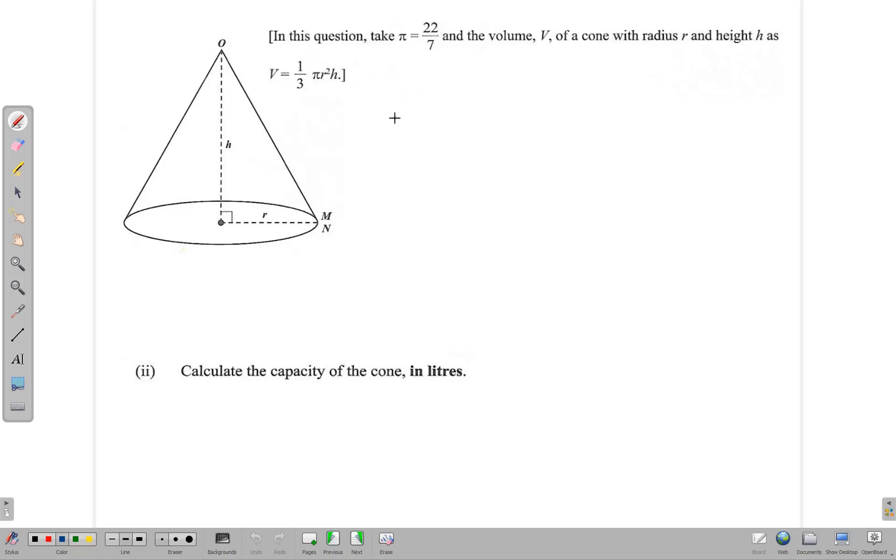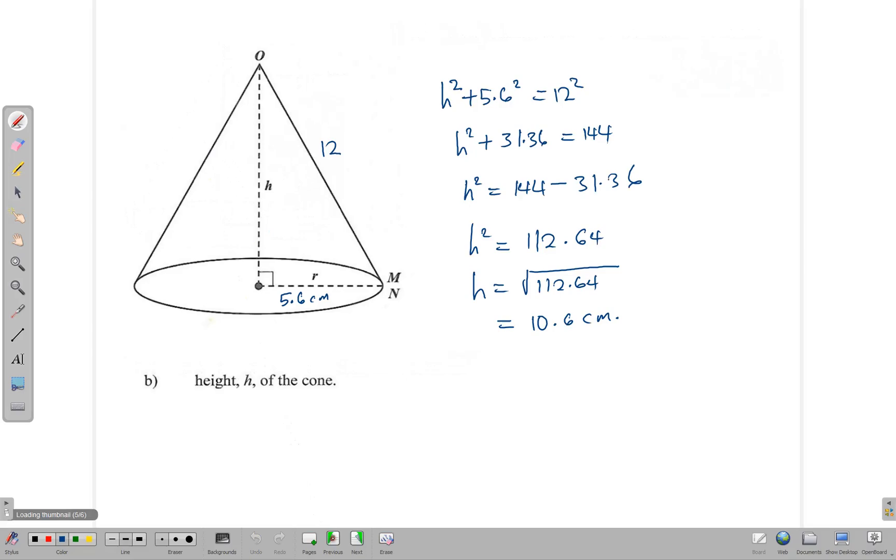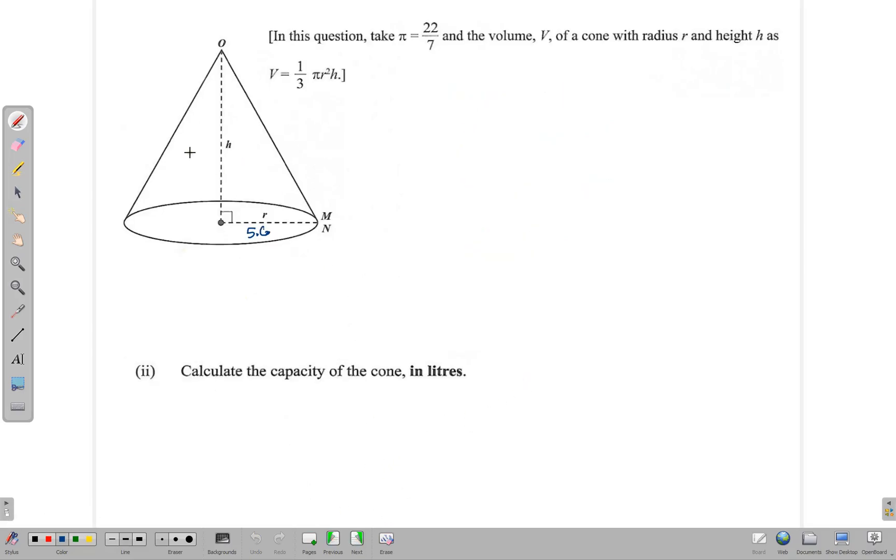Remember, our radius is 5.6 centimeters and our height is 10.6. So V = (1/3) × (22/7) × 5.6² × 10.6.